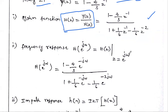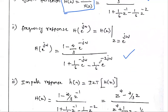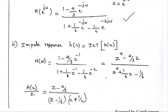This is the relation between the Z-transform and the DTFT. In place of z, if you replace with e^jω, the DTFT answer will come. So the frequency response is calculated.